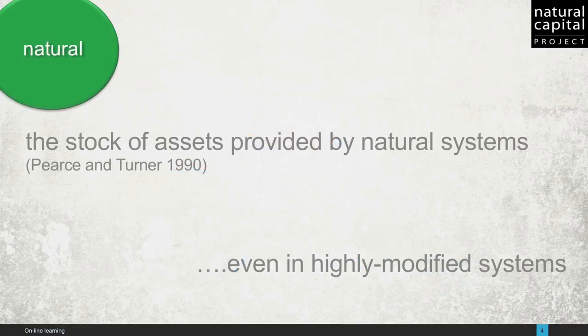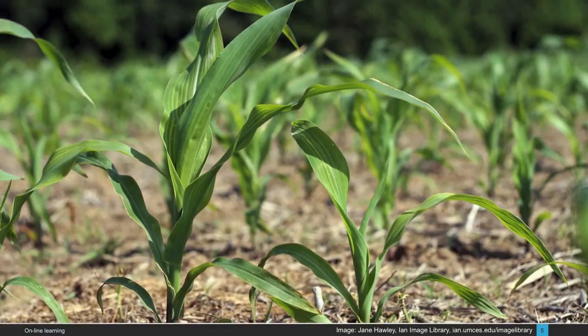Pierce and Turner defined natural capital as the stock of assets provided by natural systems. However, we would expand the definition to be sure it includes the stock of assets provided by nature, even in systems heavily modified by human activity. For example, soil is a form of natural capital that contributes to agricultural production, even though agricultural systems are not entirely natural systems.